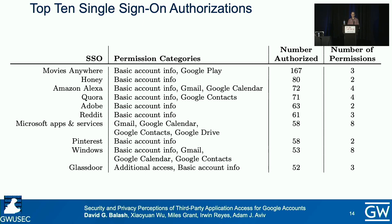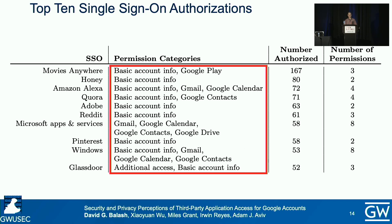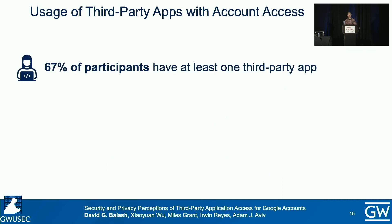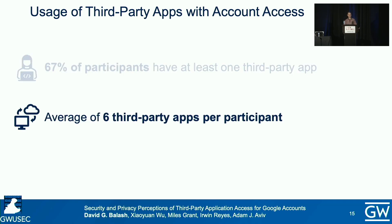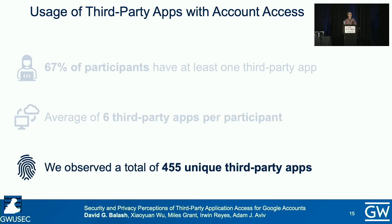Here's a list of the top 10 most authorized SSOs among our survey respondents. We noticed that six of the top 10 are authorized to access more than basic account information, showing that SSOs are used for more than just account access — for example, Alexa and Microsoft connecting to Google Calendar. Using the data collected from our browser extension, we found that 67% of participants had at least one third-party app with Google account access, and of those who have at least one third-party app, the average number of third-party apps per participant was six. And we observed a total of 455 unique third-party apps.